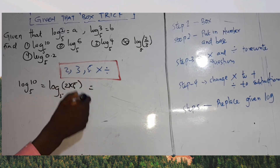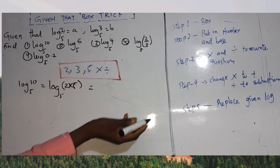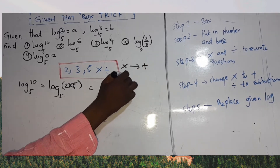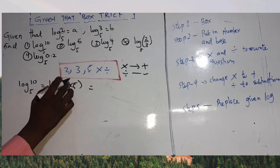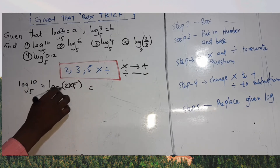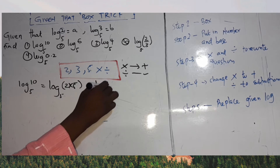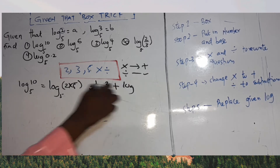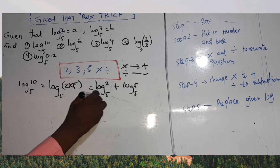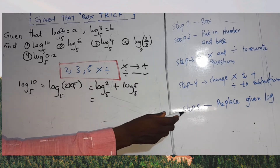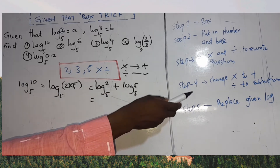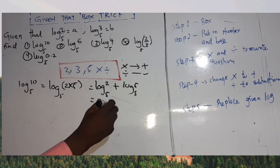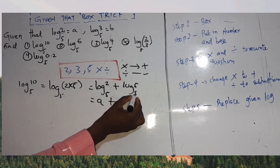After rewriting, I change the sign. Multiplication becomes addition, so log base 5 of (2 × 5) becomes log base 5 of 2 plus log base 5 of 5. Step 5: replace with given values. Log base 5 of 2 is a, and log base 5 of 5 — a number to the same base — equals 1. So the final answer is a + 1.